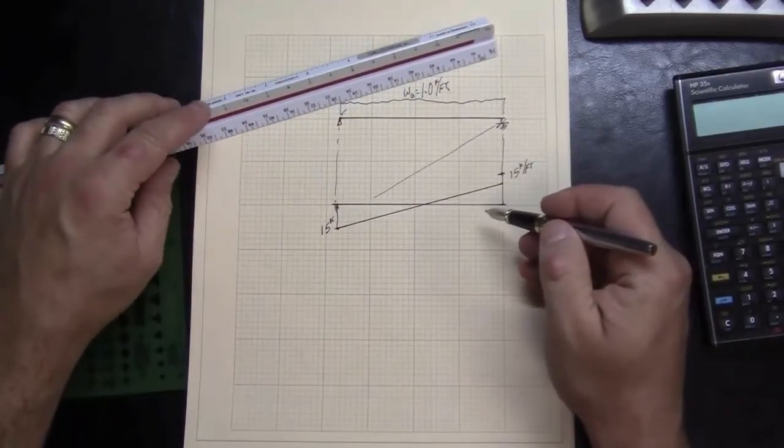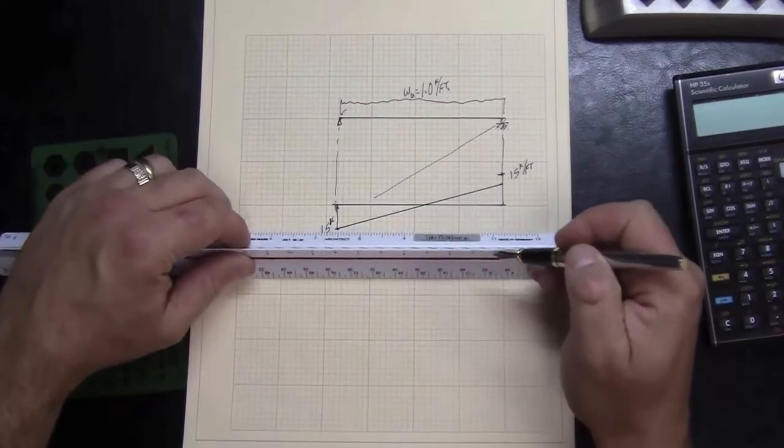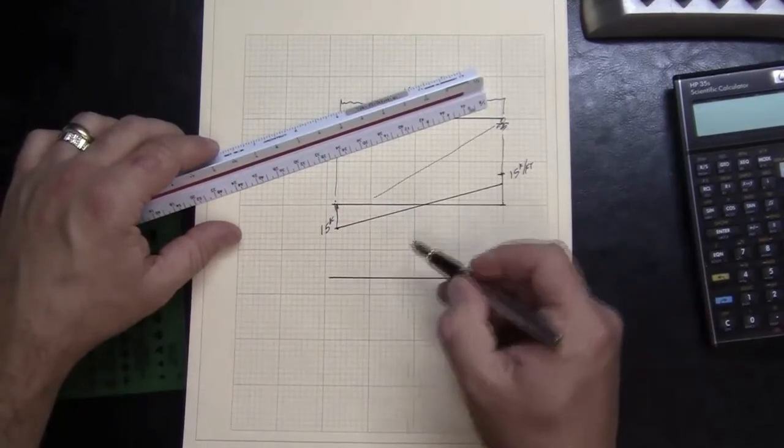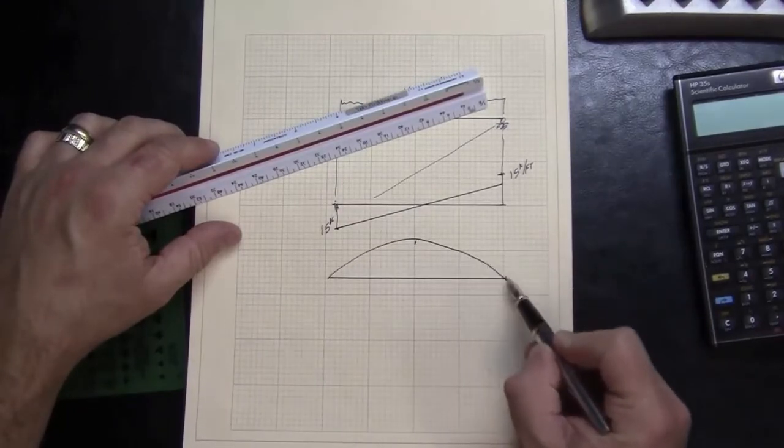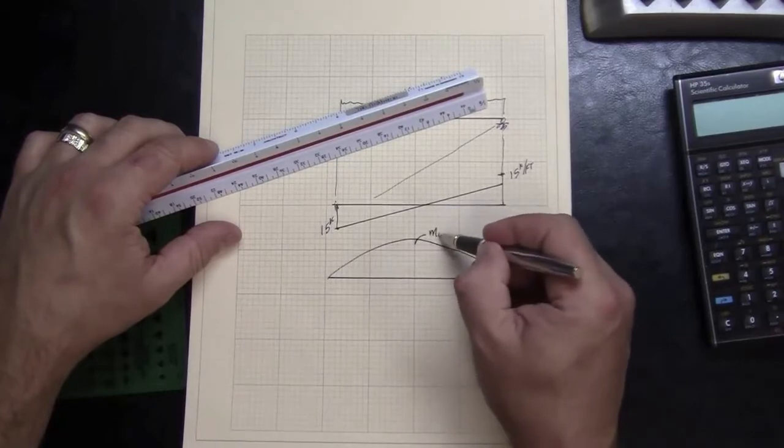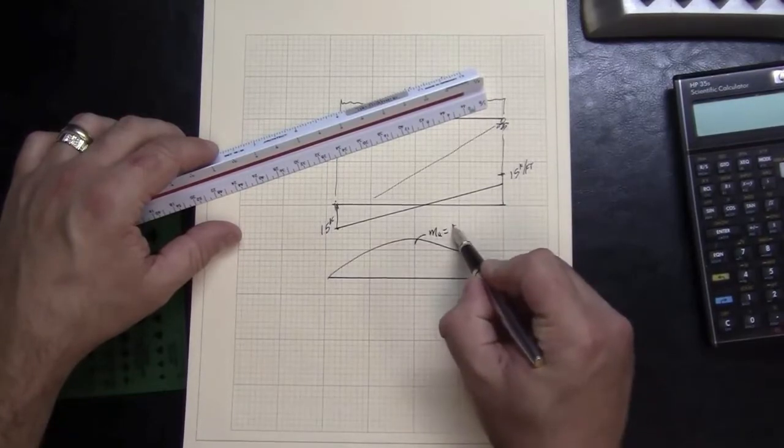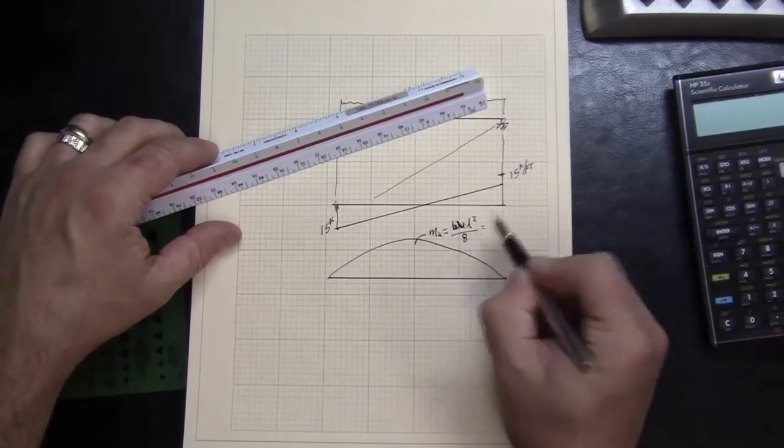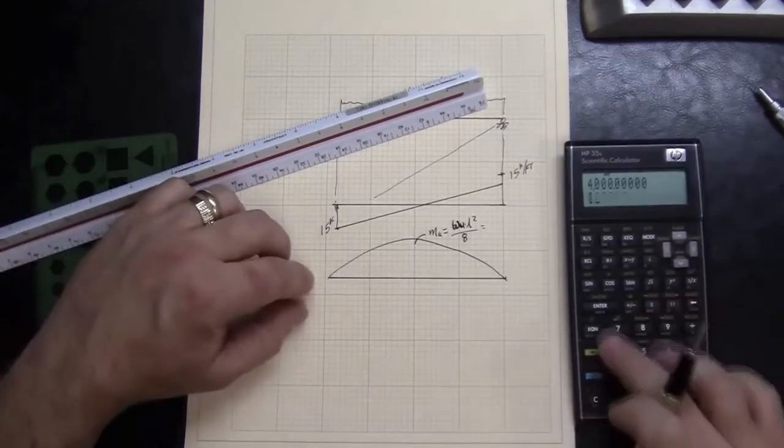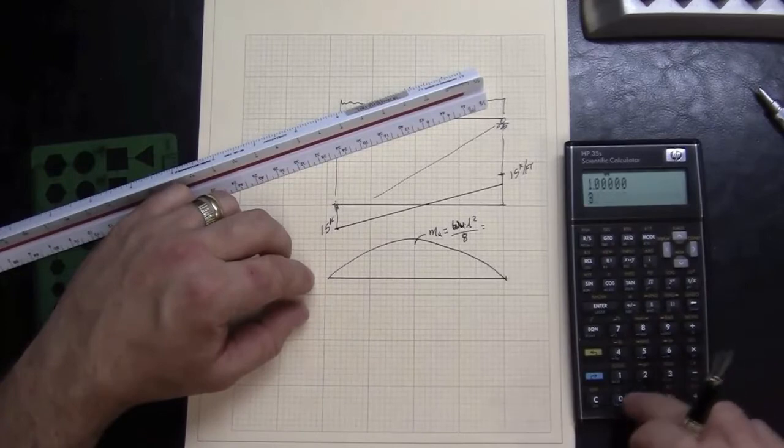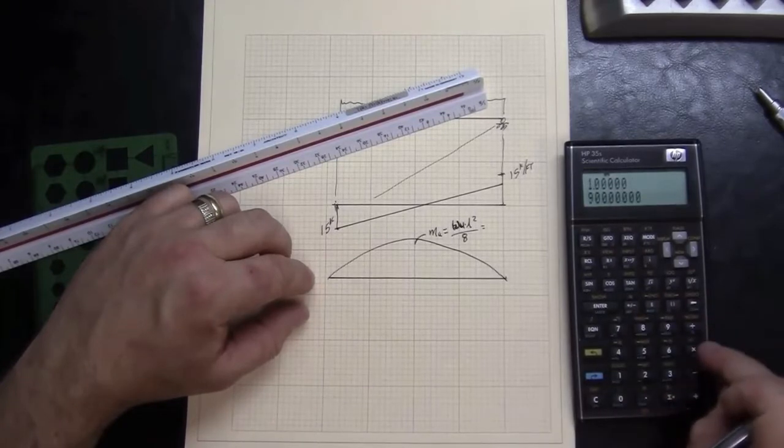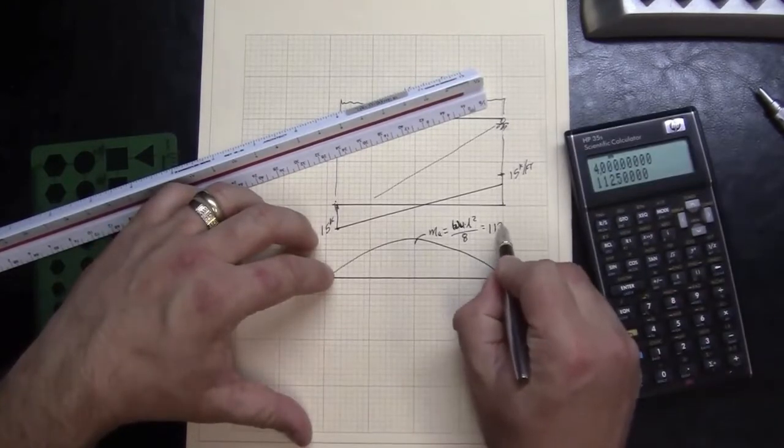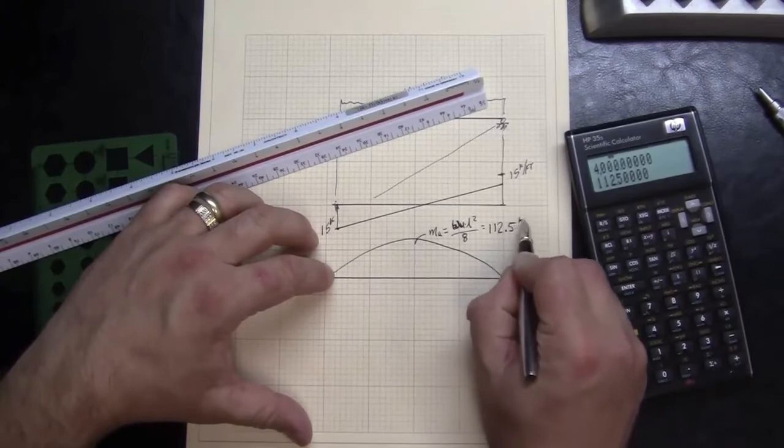And in looking at that, that would give us the moment which we calculated. I'm going to draw the moment diagram just for this example. And that would be W*L² over 8. W is one kip per foot and the L is 30 feet, divided by 8, which would give us 112.5 kip feet.